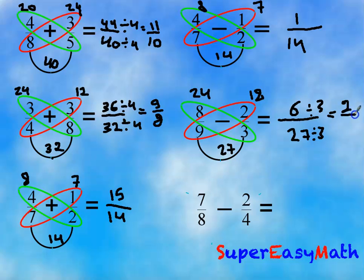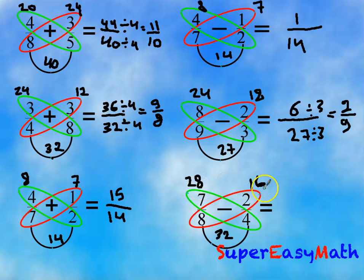And the last one: 7 over 8 minus 2 over 4. So 4 times 7 equals 28, and 8 times 2 equals 16, divided by 8 times 4 equals 32. So 28 minus 16 equals 12 over 32. If we divide by 4, we will get 3 over 8. And it's done! Hope it's clear.